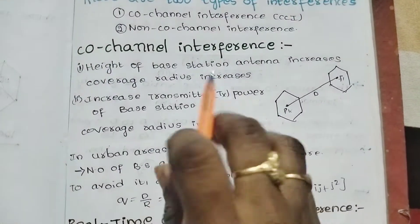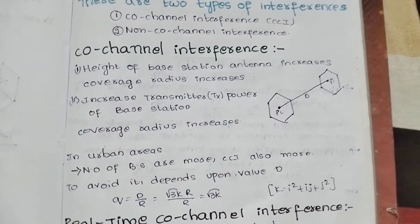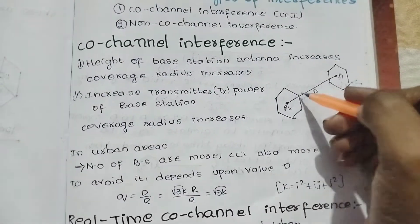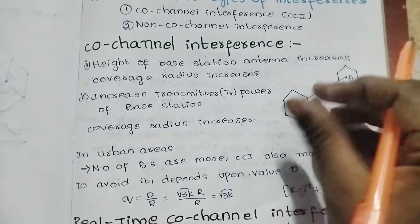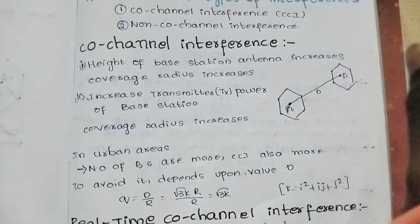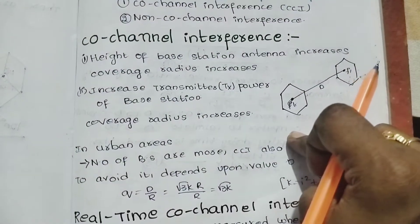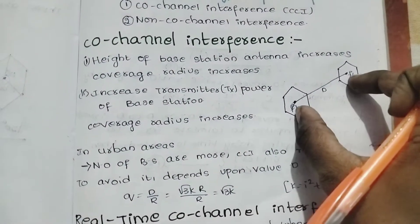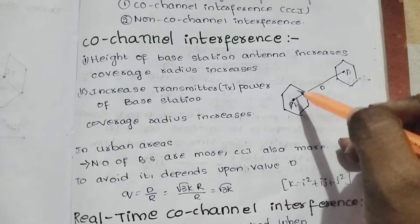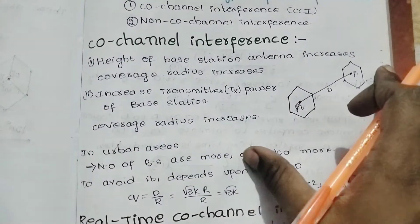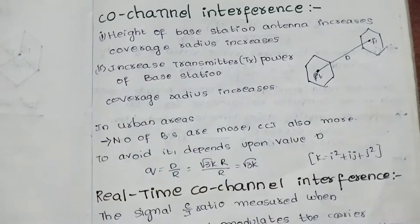Co-channel interference occurs when the same frequency is used. Co-channel interference means that we use the same frequency in different cells, and that frequency reuse causes interference between those co-channel cells.